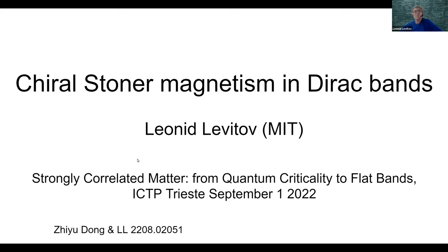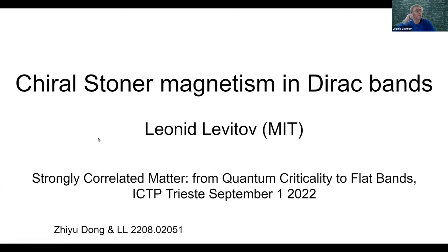The work I wanted to talk about is something recent — in Aaron's terminology it will be GC plus AC. It originated from interest in magnetism in graphene bands, but I'll try to avoid as much as possible the specifics of graphene — twisted or non-twisted bilayers — and talk about it more generally.